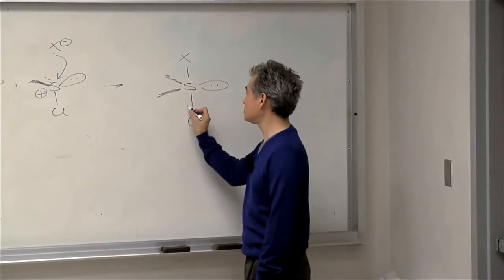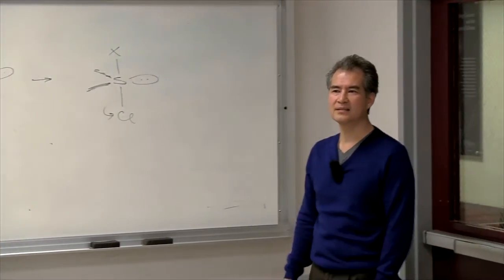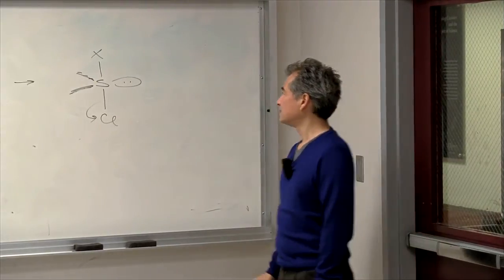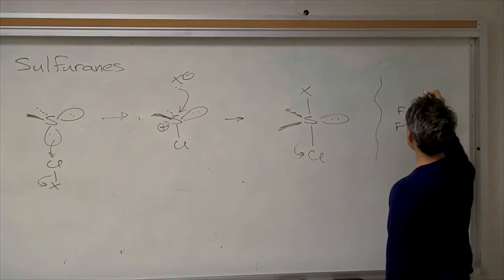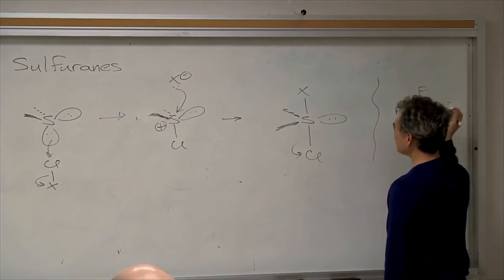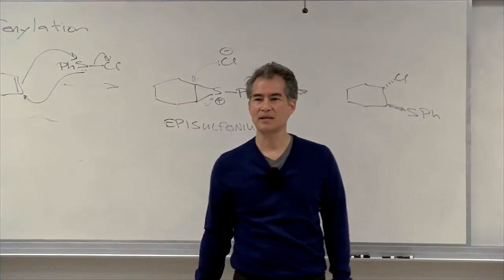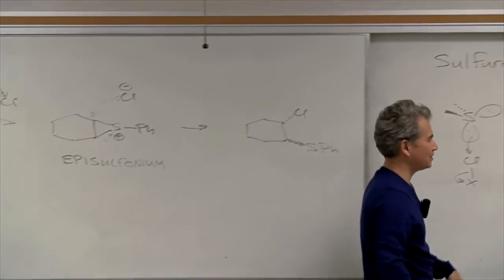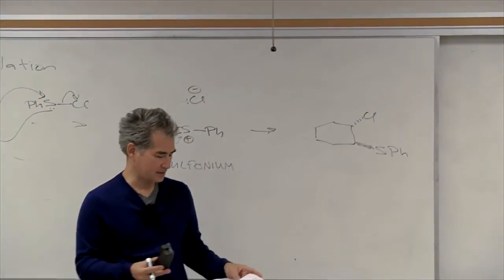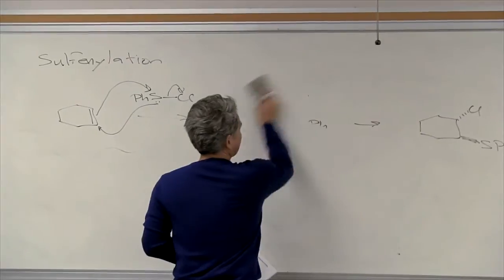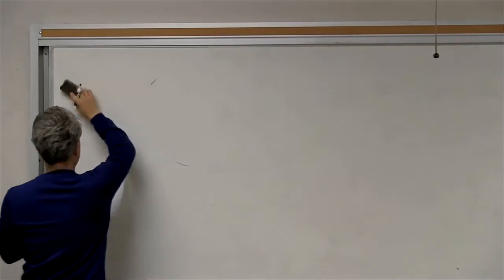If you want to make the chloride leave, do that in a second step. There's nothing weird about this intermediate — it's perfectly fine. If you buy sulfur tetrafluoride gas, it looks just like that. You can buy sulfurane intermediates from Aldrich. So don't feel like you have to make the leaving group leave as the nucleophile is attacking that sulfur. These types of sulfurane intermediates turn out to be very common in sulfur chemistry.